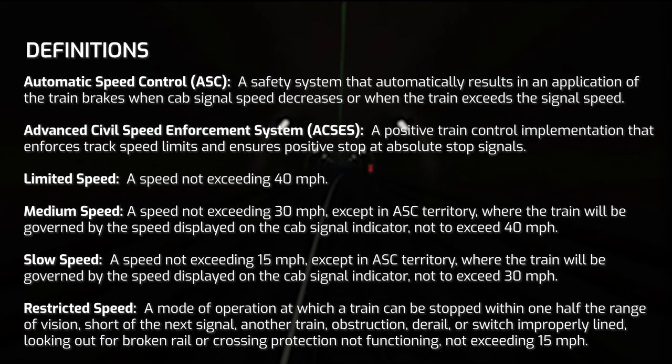Let's start with Automatic Speed Control. ASC is a safety system that is unique to the Long Island Railroad that automatically brakes the train when the cab signal speed decreases, meaning like 70 down to a 40 or whatever it may be, or whenever the train exceeds the posted signal speed on the aspect display unit.